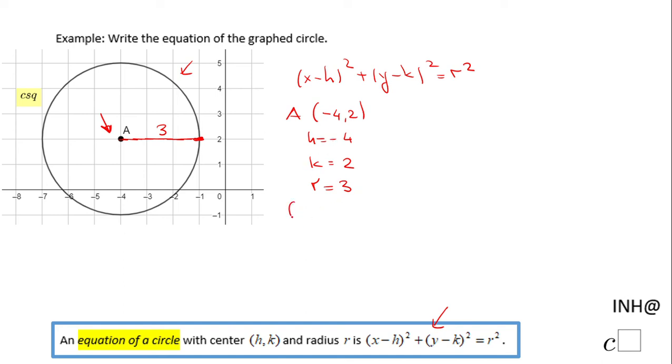So now we're going to take these numbers and plug them in. We're going to have x minus negative 4 square, plus y minus 2 square, equals radius squared, 3 squared.